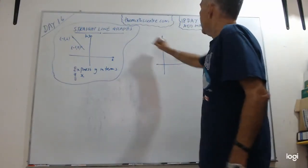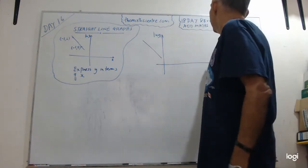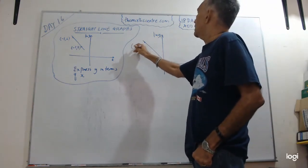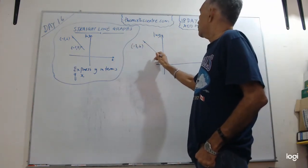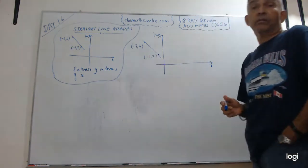Okay. So we have, this is ln Y and this is against X. You have a straight line. The points are minus three six and this will be minus one two. That's given to us. You have to express Y in terms of X.